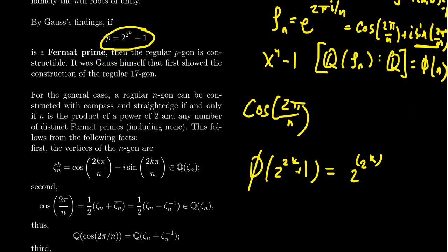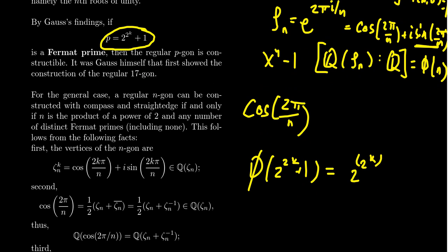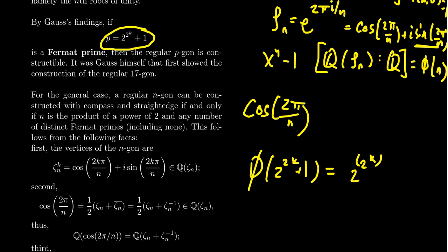This is true for any Fermat prime. If the Fermat prime is repeated because of the property we mentioned earlier, you no longer get a power of 2. You get a power of 2 times something else. Now, if you take a power of 2 itself, 2 to the k, this is 2 to the k minus 2 to the k minus 1, which becomes 2 to the k minus 1.